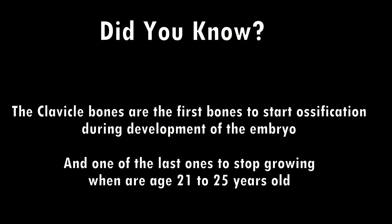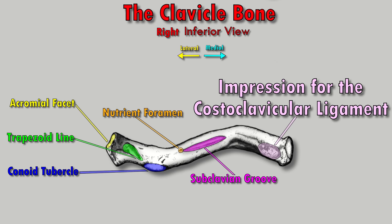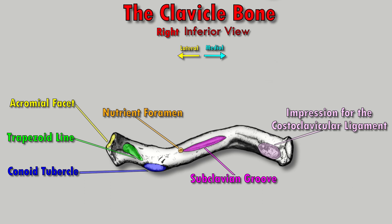The clavicle bone is one of the first bones to start growing in the womb and one of the last bones to stop growing, when you're about 21 to 25 years old. Next up we have the impression for the costoclavicular ligament — don't confuse this with the coracoclavicular ligament; 'costo' means ribs. Then we arrive at the medial end, the sternal end, where the sternal facet articulates with the manubrium of the sternum to make up the sternoclavicular joint.